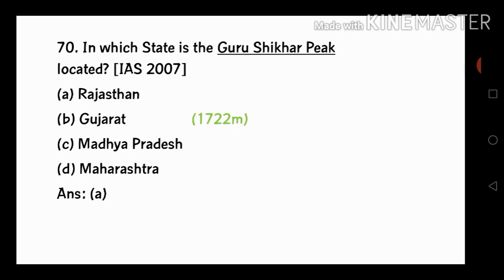In which state is the Guru Shikhar peak located? The options are Rajasthan, Gujarat, Madhya Pradesh, and Maharashtra. The answer is Rajasthan. The height is 1,007 meters.